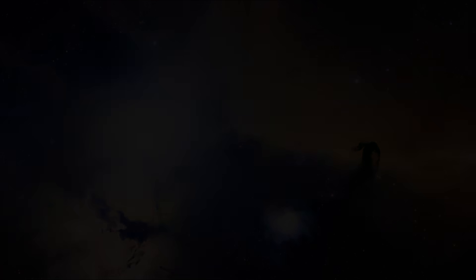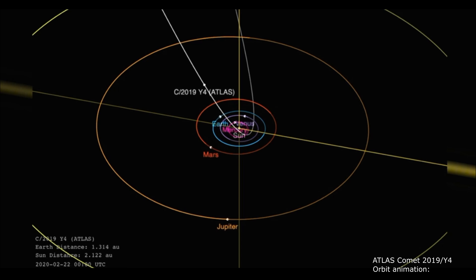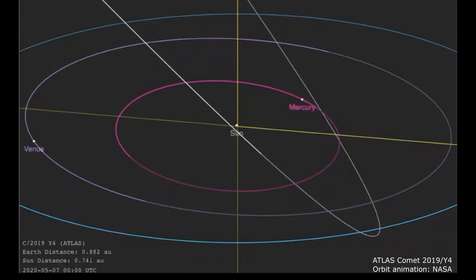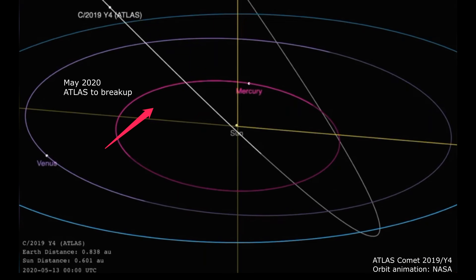Hello everyone, welcome back to my channel. I'm doing a quick narrative here on the Atlas Comet, supposed to be a spectacular view coming this May of 2020. It's expected the Atlas Comet to shatter up. Here you're viewing a quick animation from NASA of the trajectory of the Atlas Comet, and it is going to break up probably by when it gets into Mercury's orbit.